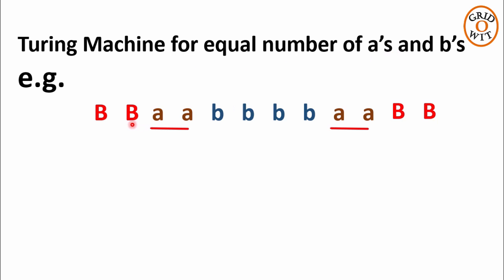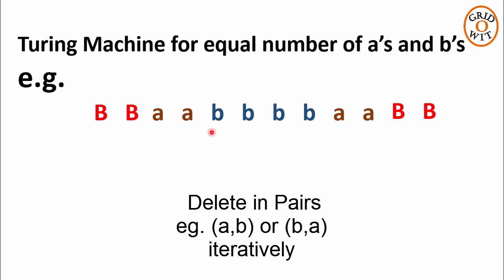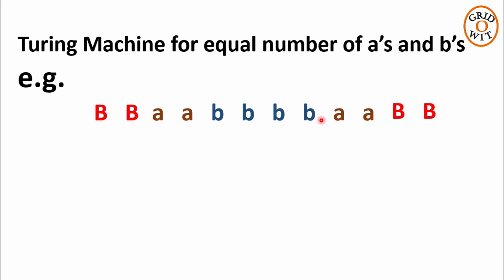In this example, the number of As are 4 and number of Bs are also 4. The idea is very simple. If we delete the pairs of AB iteratively, then at the end, all the As and Bs will be depleted together — or we can say vanish together. And we will not find any A or B which is left to be deleted at the end.